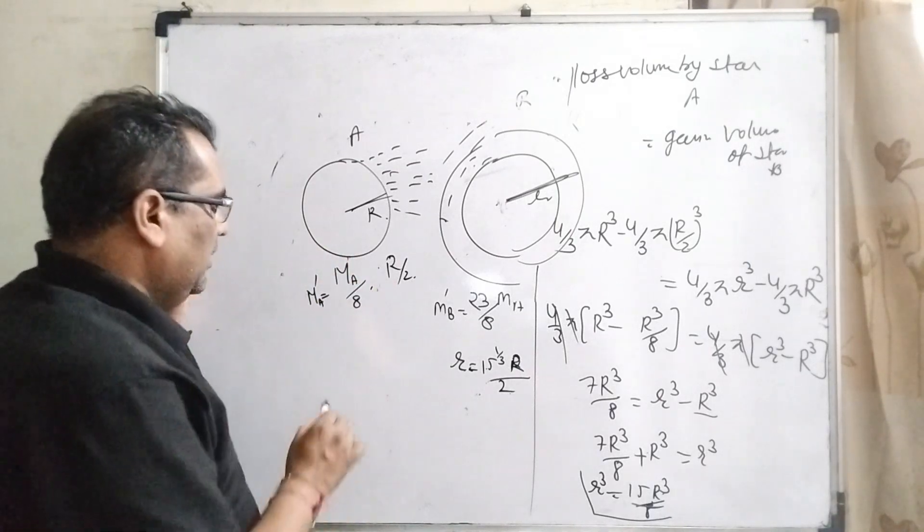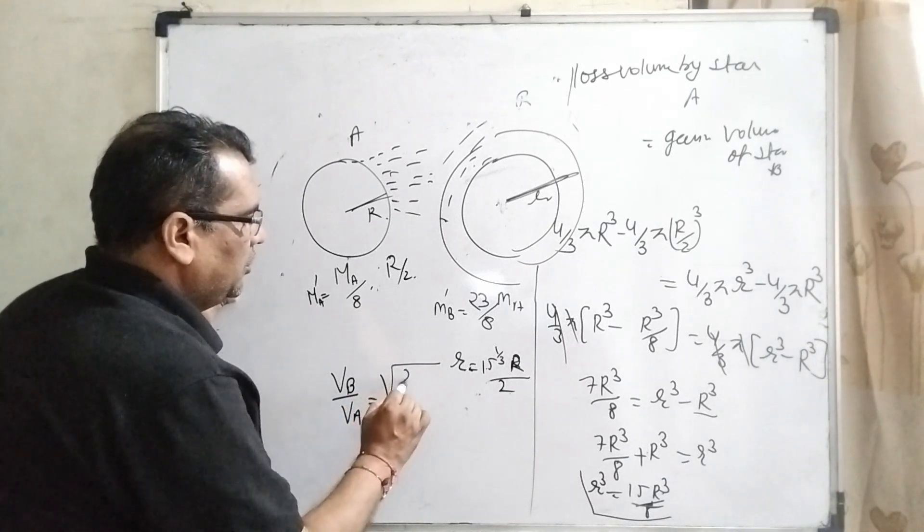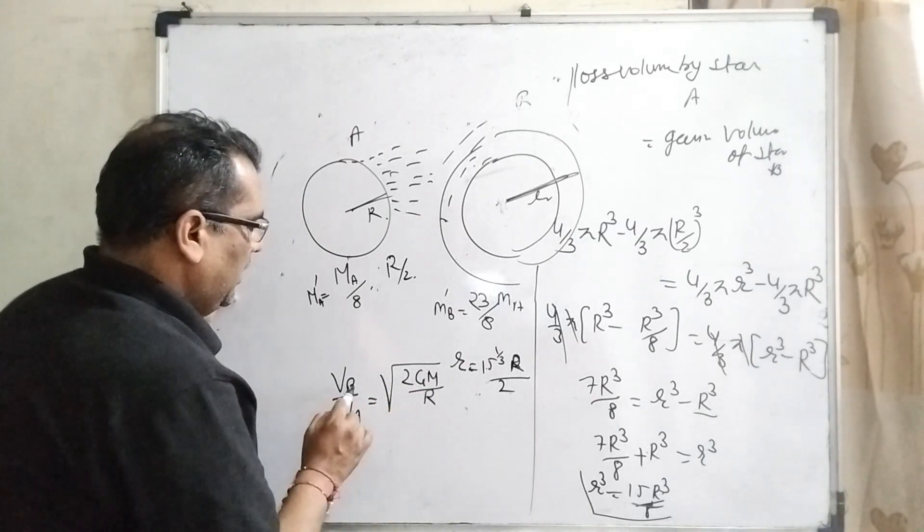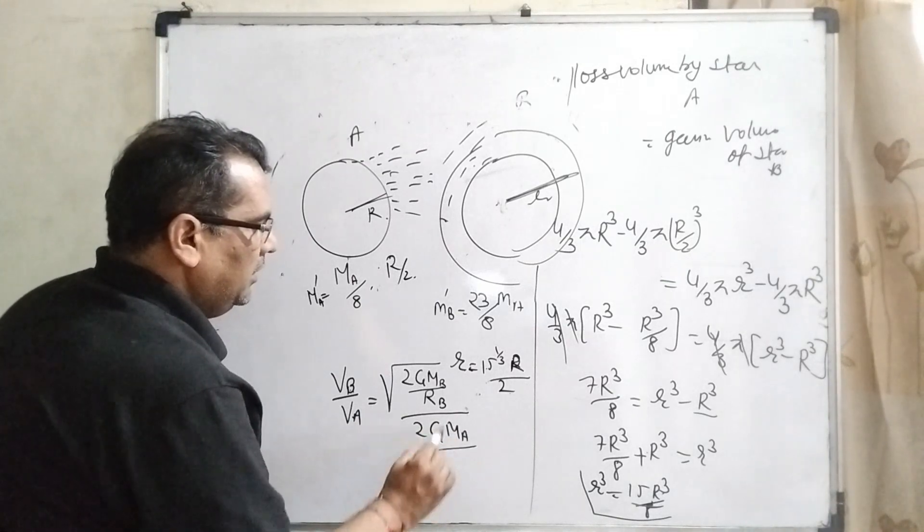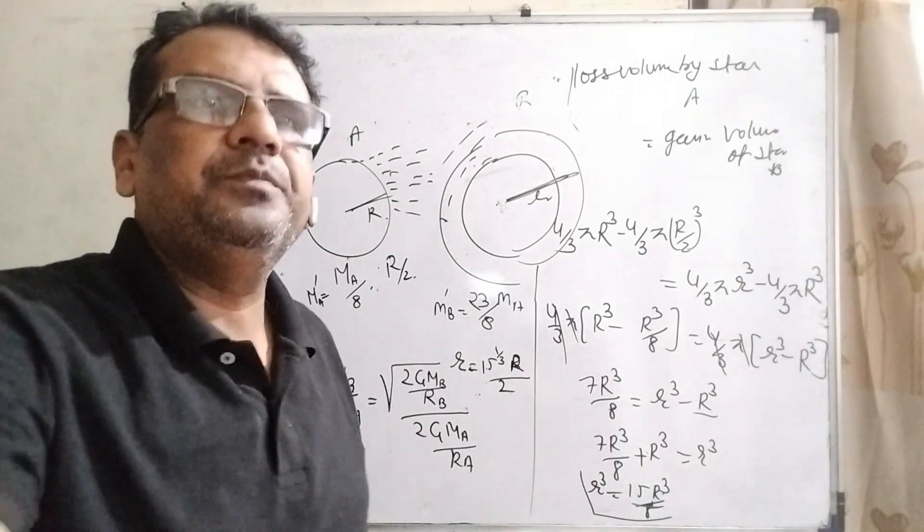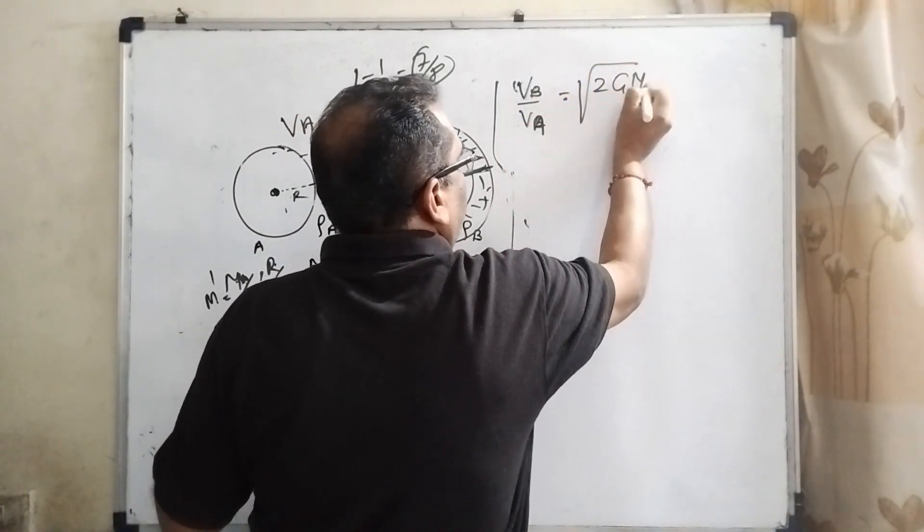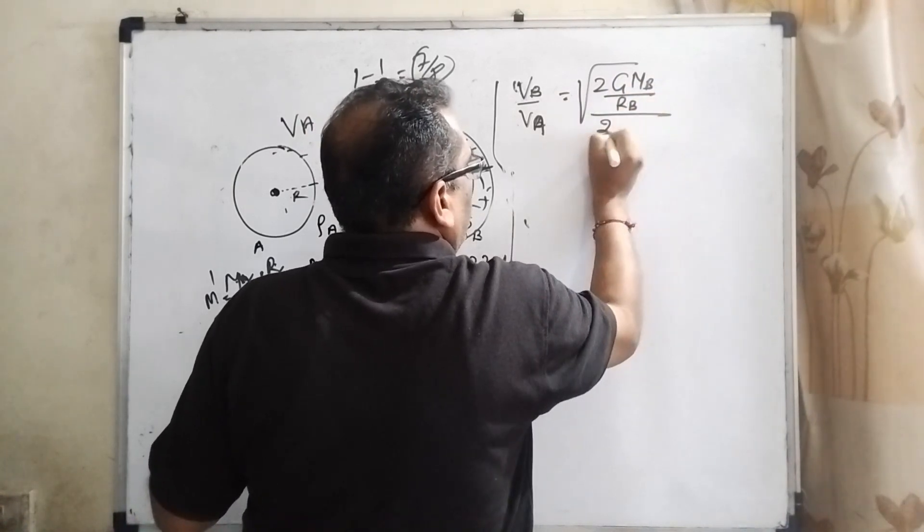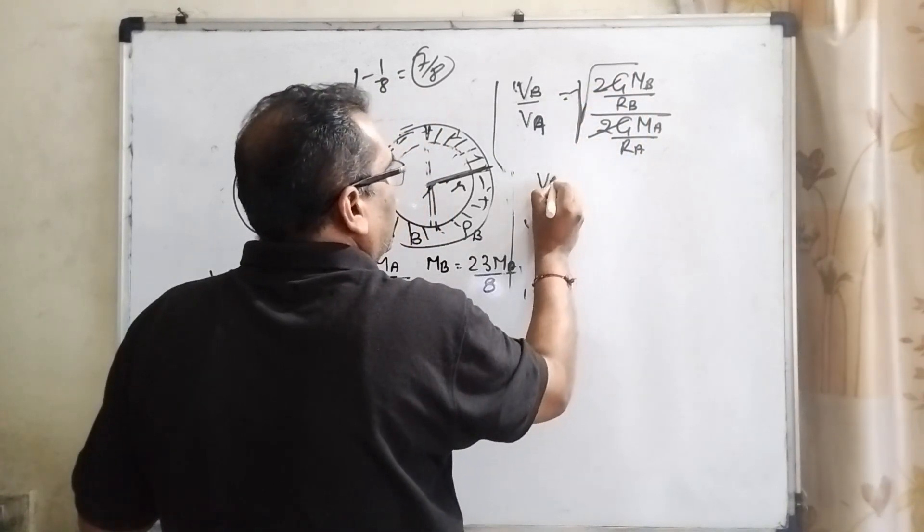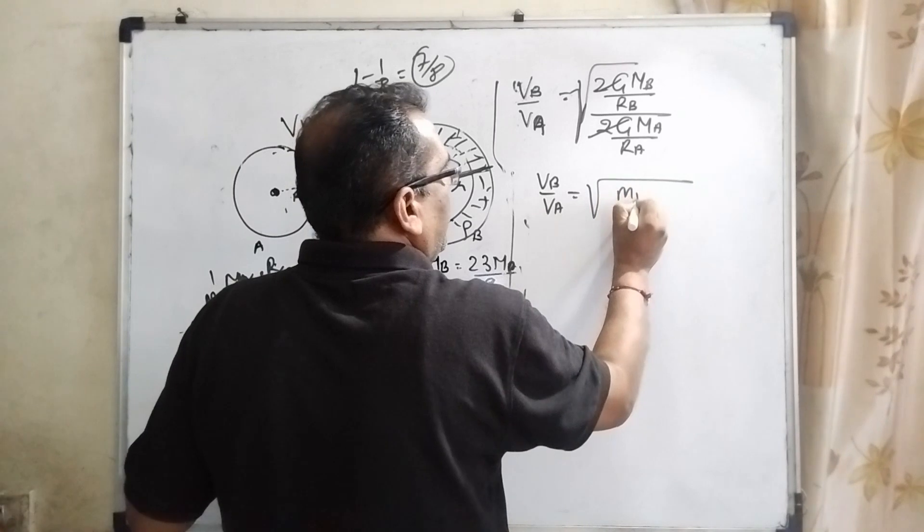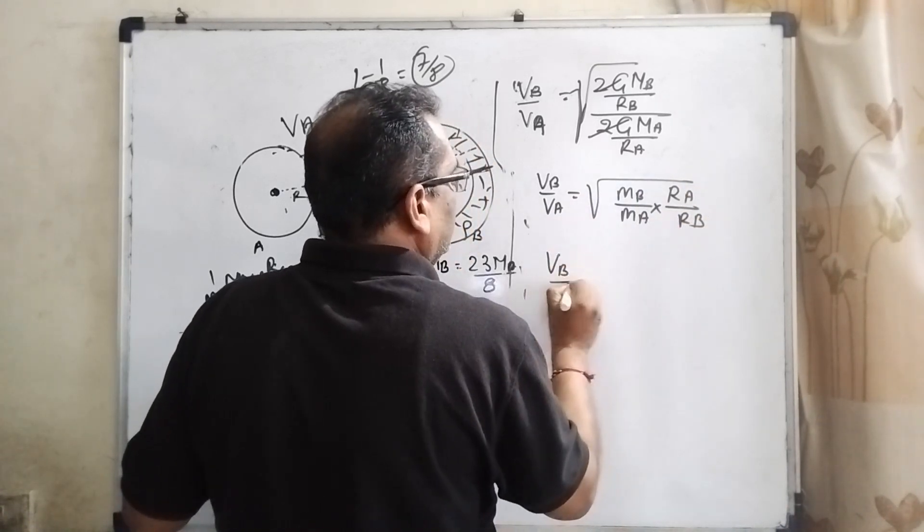Now we come to escape velocity. What is escape velocity? Vb upon Va equals root of 2GMb upon Rb divided by root of 2GMa upon Ra. 2G cancels out. Vb upon Va equals root of Mb upon Ma times Ra upon Rb.